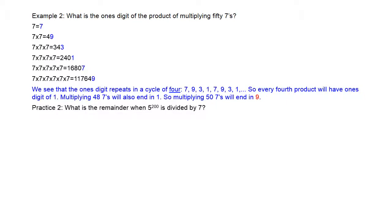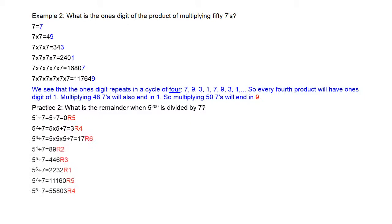Let's try another one — unpause the video when you're ready. What's the remainder when 5 to the power of 200 is divided by 7? That number is going to be very large. Let's do some observation. 5 to the power of 1 divided by 7 gives remainder 5. 5 squared is 25, divided by 7 gives remainder 4. Let's continue increasing the power of 5 and track what each remainder becomes: five, four, six, two, three, one.